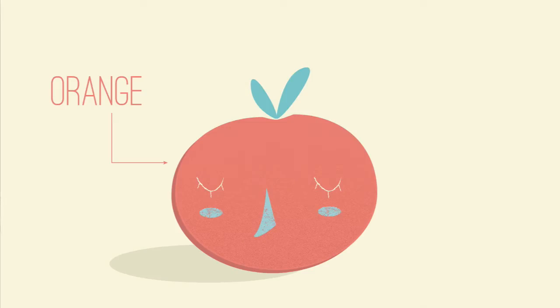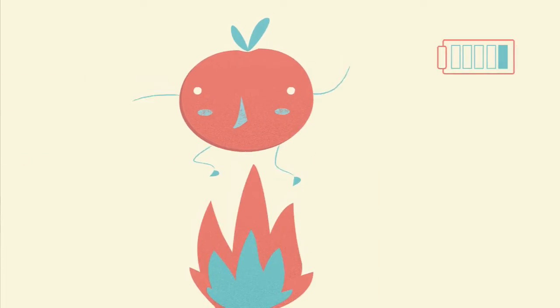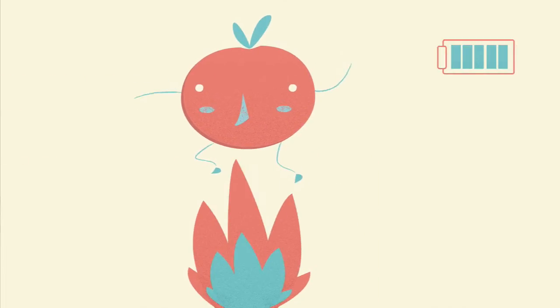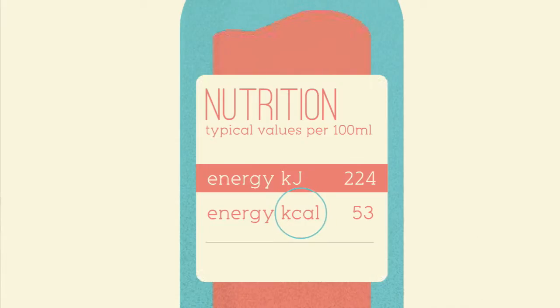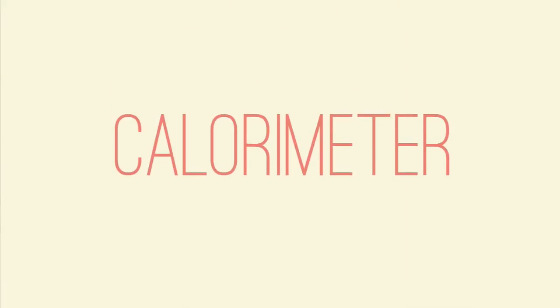When you look at food items, their energy content was worked out by burning the food in oxygen to see how much energy is released. This corresponds to the energy content label, and is given in calories. To do this, you have to use a calorimeter.